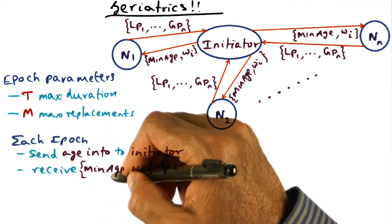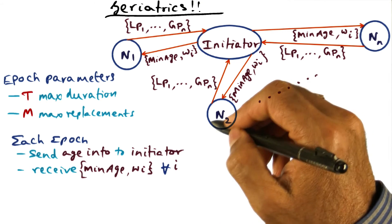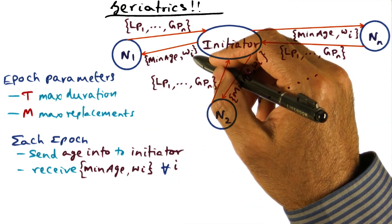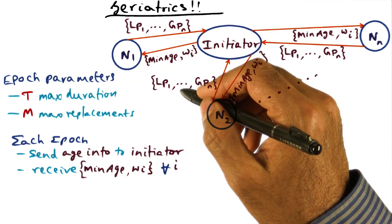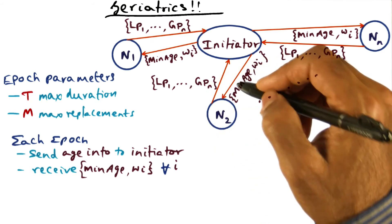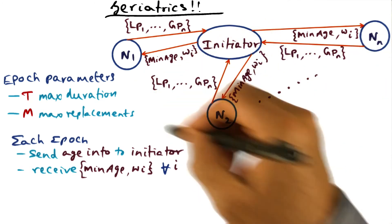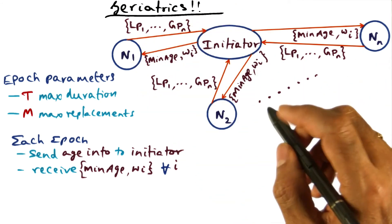So each node is going to receive the min age and also the weight for all i, meaning each node is not only receiving its own weight, that is its own fraction of the M pages that are going to be replaced, but it is also getting the fraction of the pages that are going to be replaced from each of its peer nodes in the entire cluster. And we'll see how this information is going to be used by each one of these nodes.